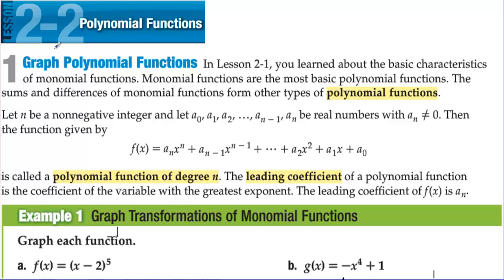Section 2.2: polynomial functions. In lesson 2.1 you learned about the basic characteristics of monomial functions — like y equals x squared, that's a monomial function. Monomial functions are the most basic polynomial functions. The sums and differences of monomial functions form other types of polynomial functions.